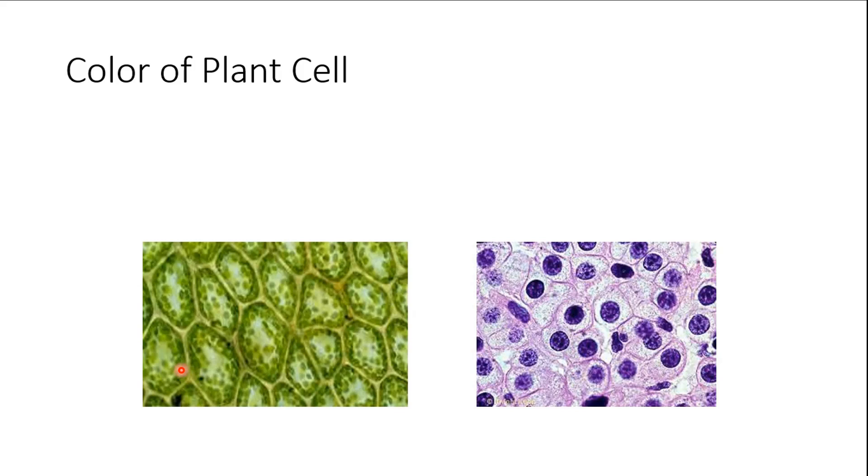Moving on, color of plant cells. Which is the plant cell? You should already know that the plant cell hopefully is the green one, and the animal cell is the non-green one. Animal cells can be pink or pinkish, but in this case this one is stained purple. Plant cells tend to be greenish, and the reason for that is because they have chloroplasts.